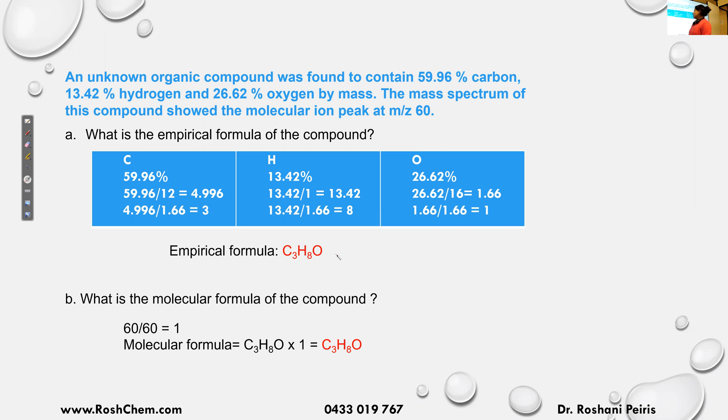Then the next question is asking, what is the molecular formula of the compound? So we have this information here. It says the mass spectrum of this compound showed the molecular ion peak at 60. So what information I can get from this? The molecular ion peak at 60 means the molar mass of the compound is 60.